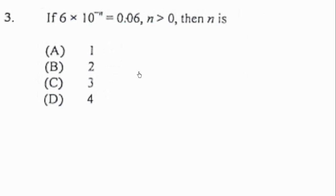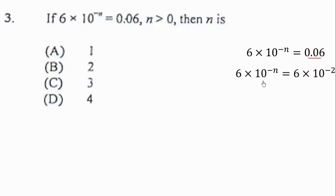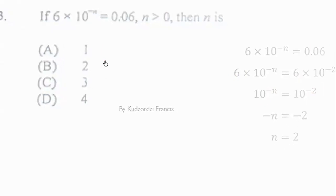Next: if 6 times 10 to the power of negative n equals 0.06, where n is greater than 0, then what is n? We rewrite 0.06 in standard form, noting that moving the decimal point forward twice gives a negative exponent. Comparing exponents — since the bases are equal — we can solve for n.